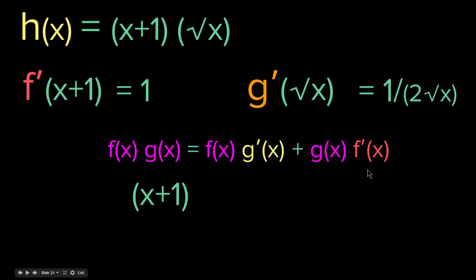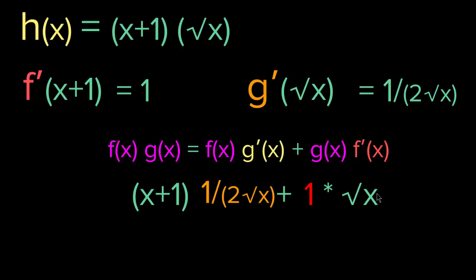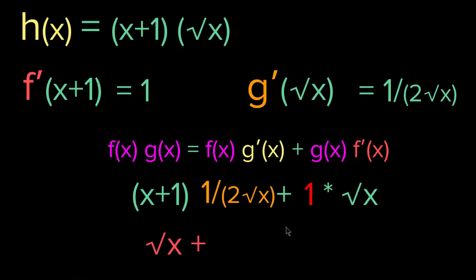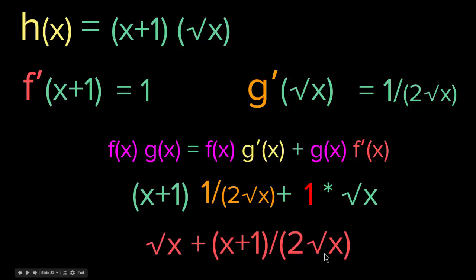What we get is the first function, which is (x + 1), times the derivative of the second function, which is 1 over 2 square root of x, plus the second function, which is square root of x, times the derivative of the first function. The derivative of (x + 1) is just 1. At the end, we get square root of x plus (x + 1) over 2 square root of x.